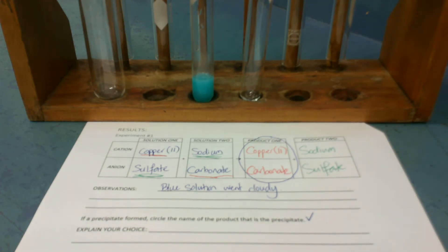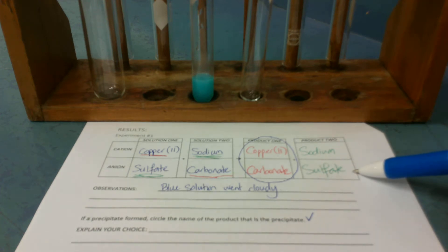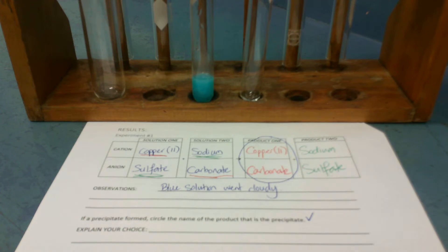So when I explain this, what I say is, even though the sulfate product, so product 2, is soluble, product 1, copper-2 carbonate, is insoluble. That is why it is a precipitate.